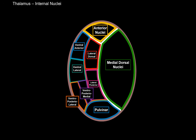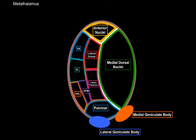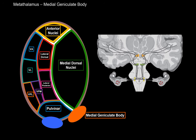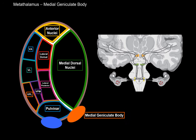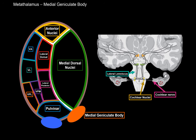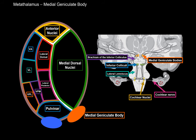Now for the metathalamus — the medial geniculate body and the lateral geniculate body. The medial geniculate body is associated with hearing and is part of the auditory pathway. This pathway starts at the cochlea, which converts hearing into nerve signals through hair cells. These signals are sent through the cochlear nerve to the cochlear nuclei in the pons, cross to form the trapezoid body, ascend as the lateral lemniscus to the inferior colliculi, then through the brachium of the inferior colliculus to the medial geniculate body, and finally to the primary auditory cortex at the superior temporal gyrus.